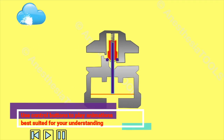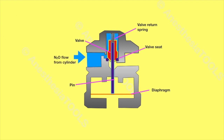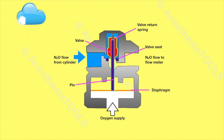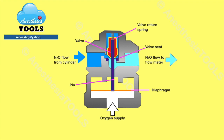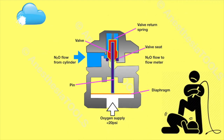This is a simplified internal structure — you can identify the valve, spring, pin, and diaphragm. Here, nitrous oxide flows in from the cylinder but there is no output to the nitrous oxide flow meter while oxygen supply is absent. When the oxygen line is pressurized, the diaphragm is pushed by oxygen pressure, the valve opens, and nitrous oxide output is seen. When oxygen pressure falls below 20 psi, the valve closes and there is no more nitrous oxide output. Thus, the nitrous oxide regulator acts as a slave regulator to oxygen as the master.